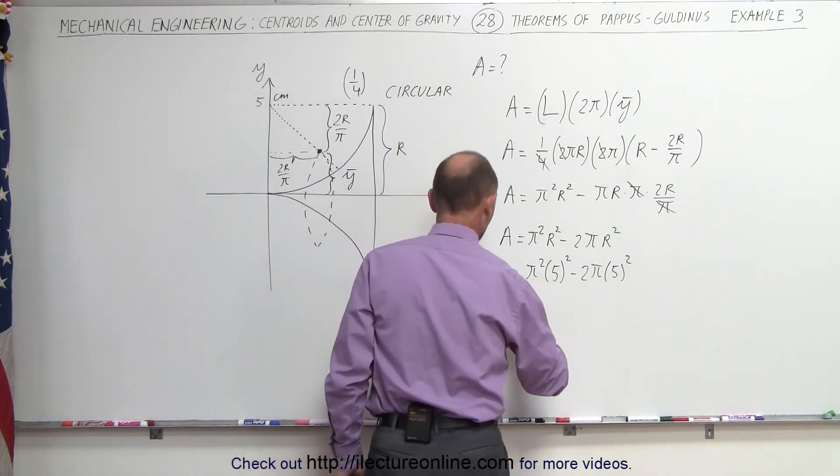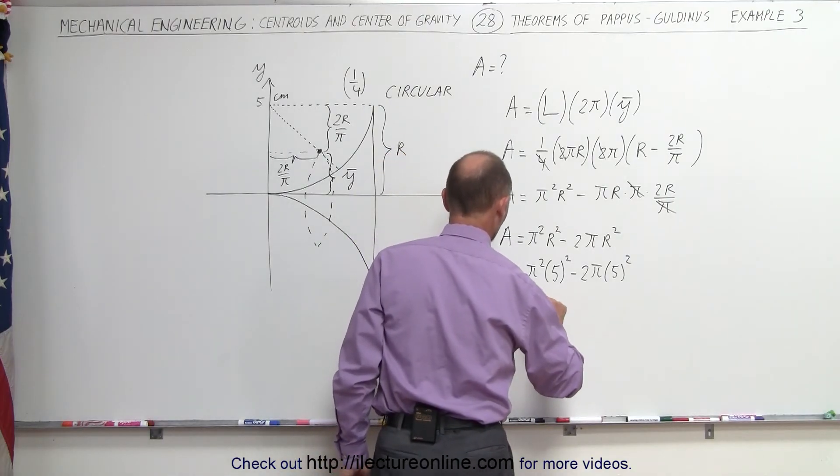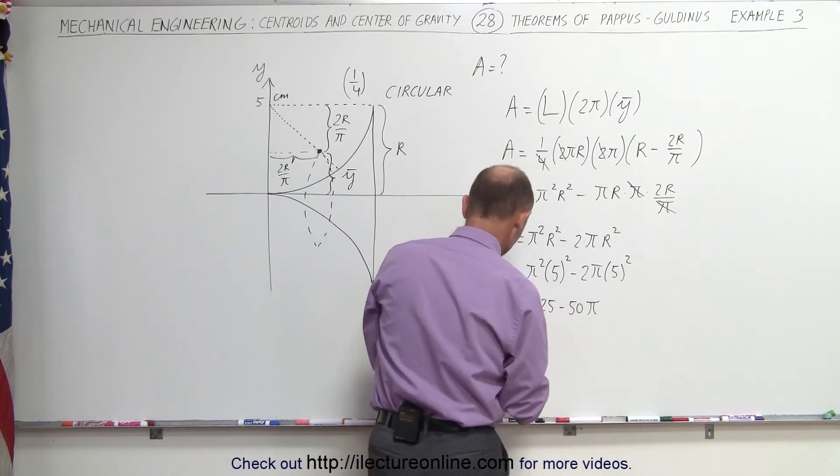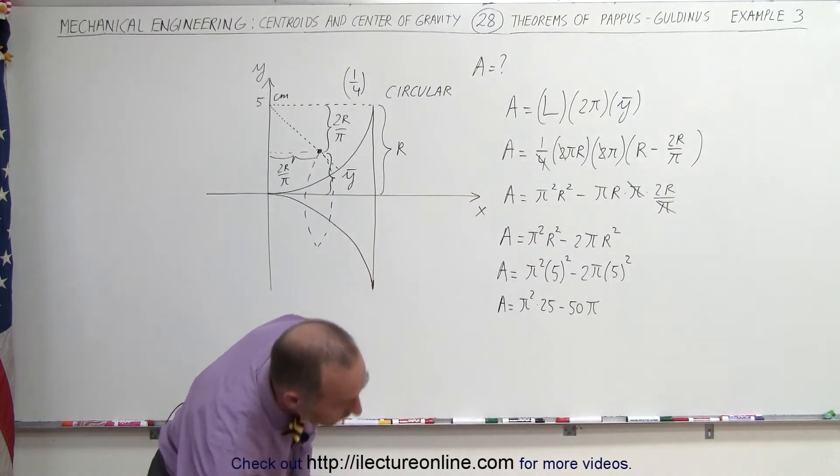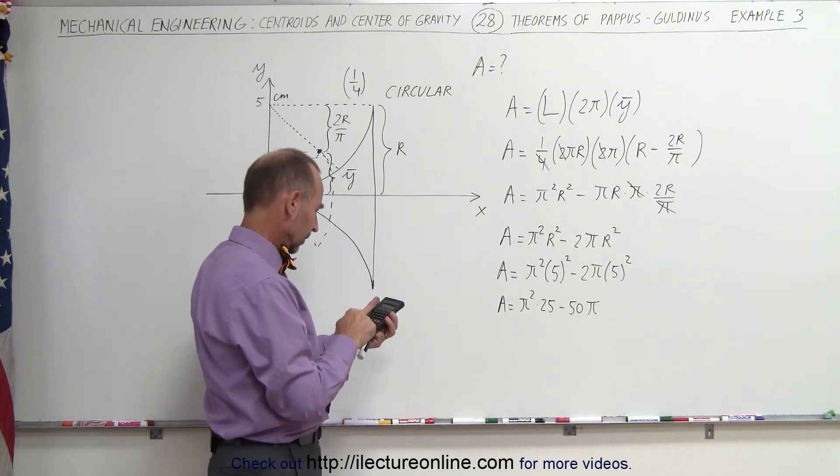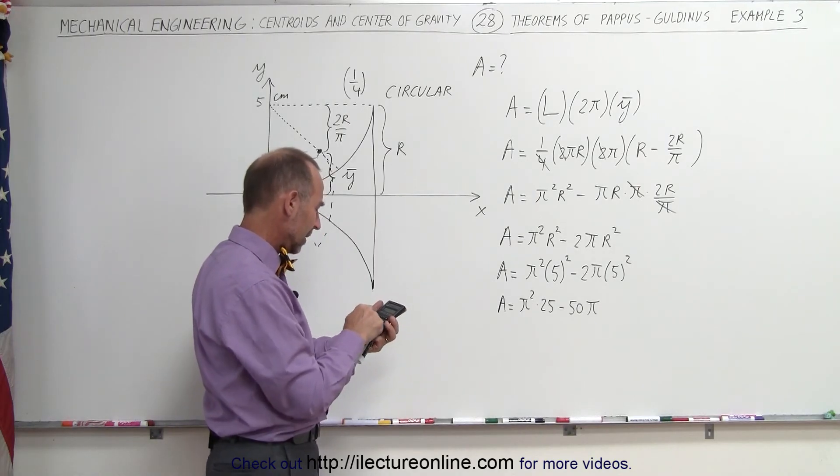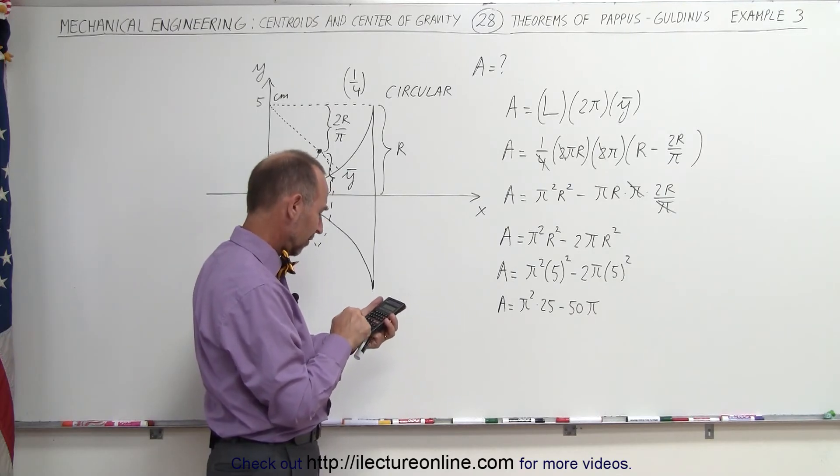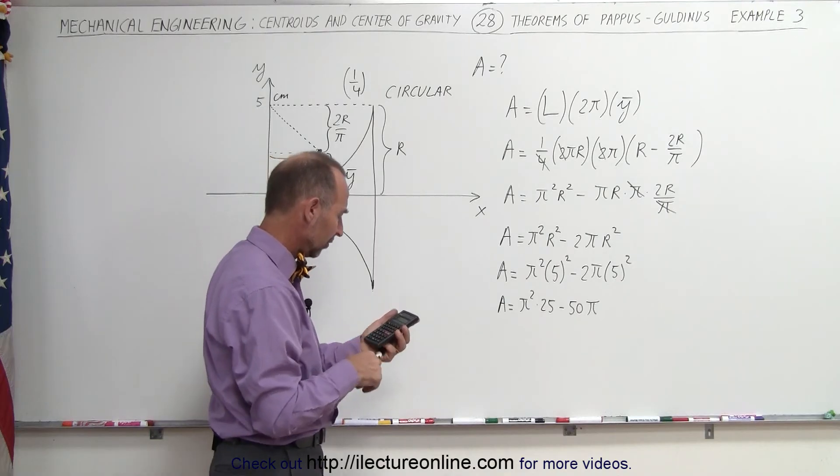So area is equal to π² times 25 minus 50 times π. Here's my calculator.